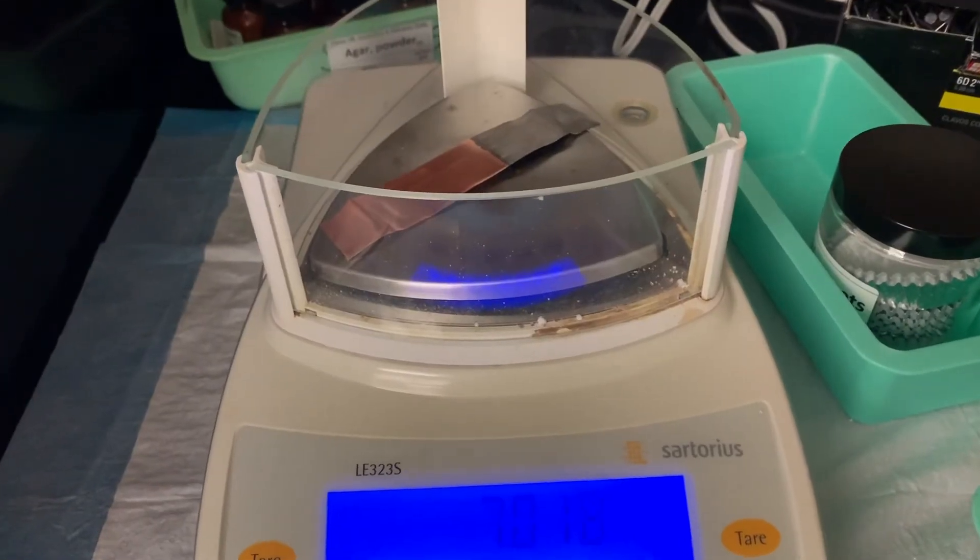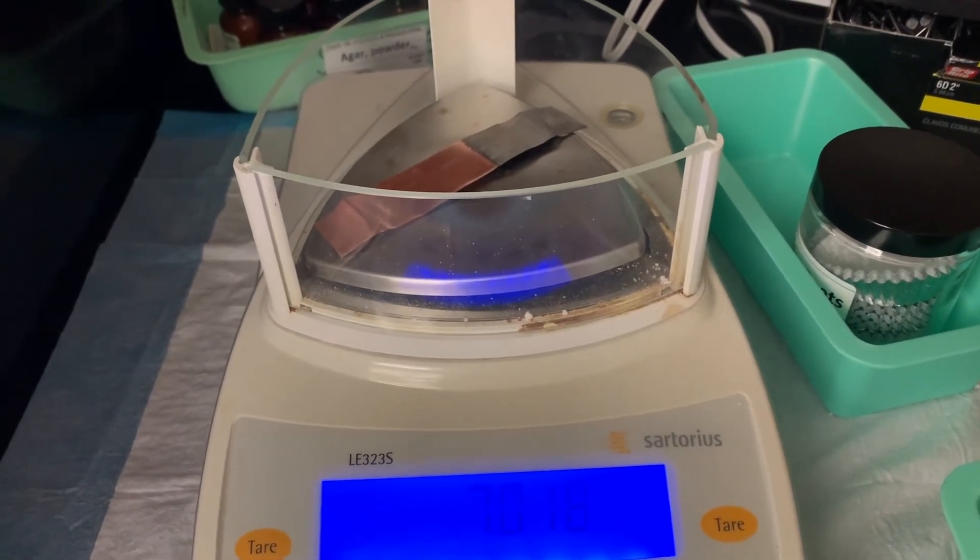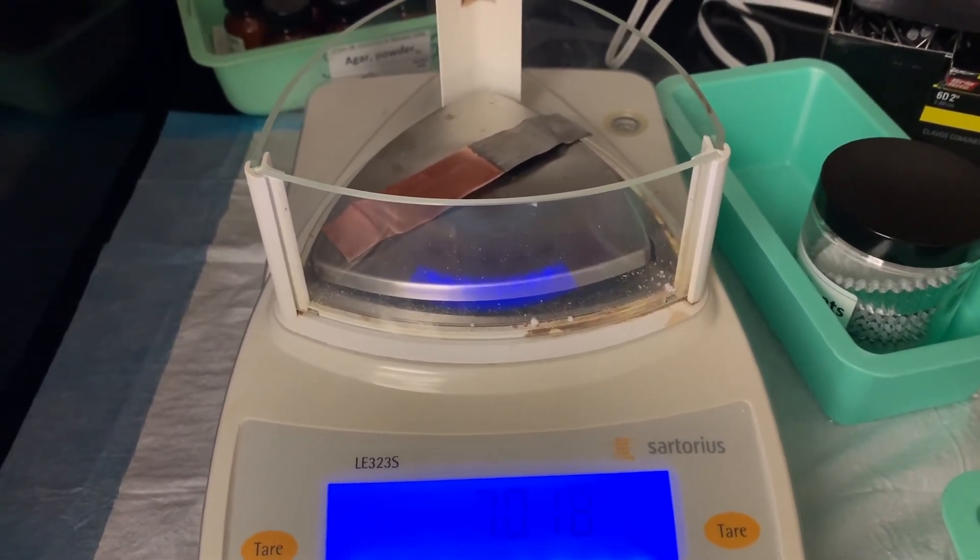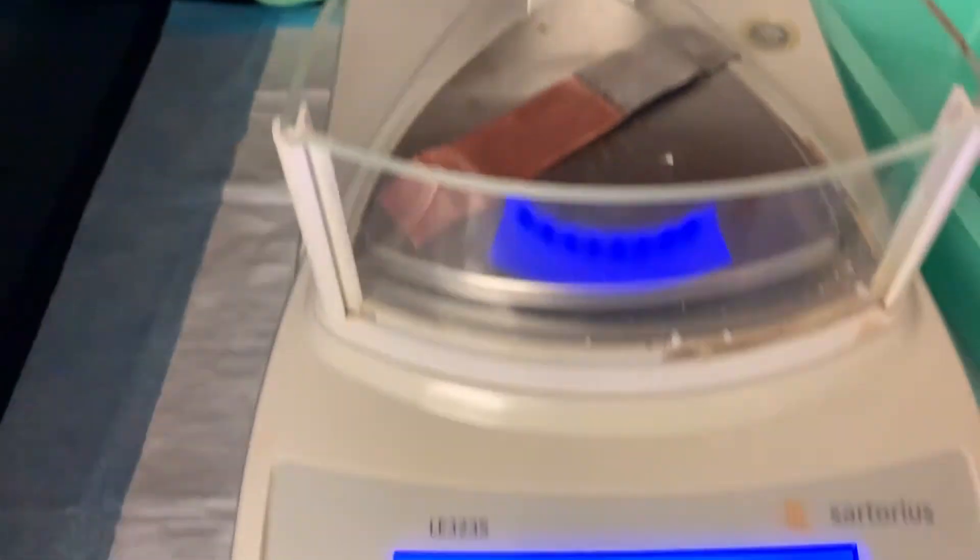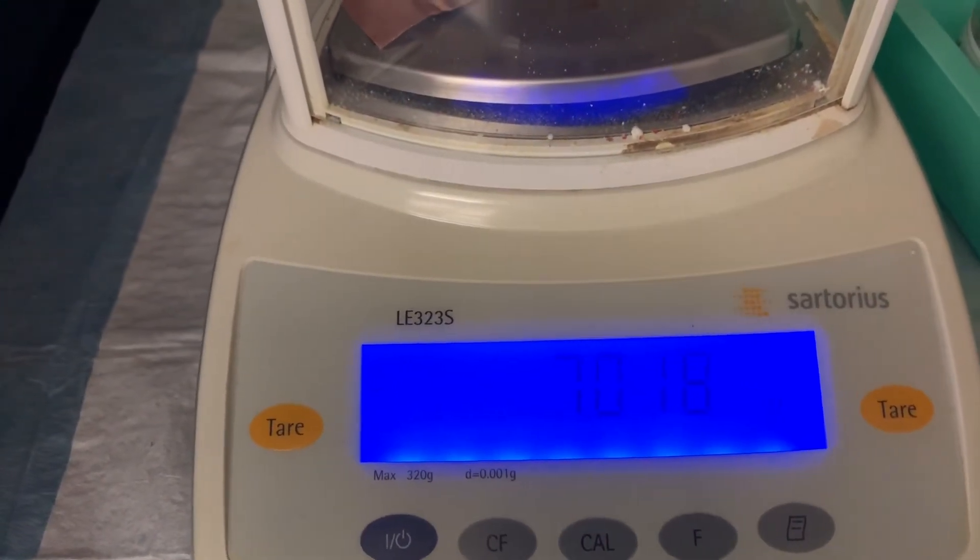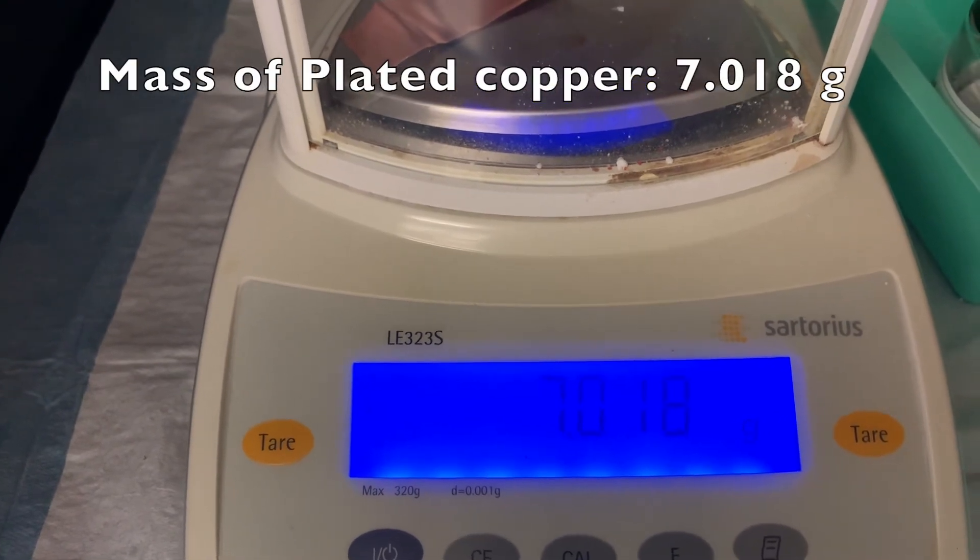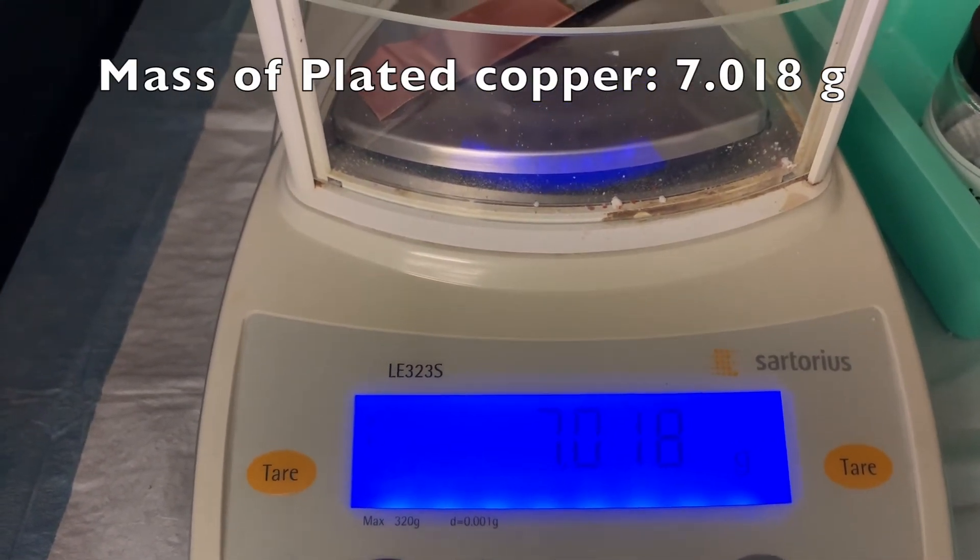I'm measuring the mass now of that copper metal. It was the same one I measured the mass of before, but now this is after electroplating with the nickel plated on, so our mass should have went up. It did, 7.018 grams, so go ahead and write that in your data table.